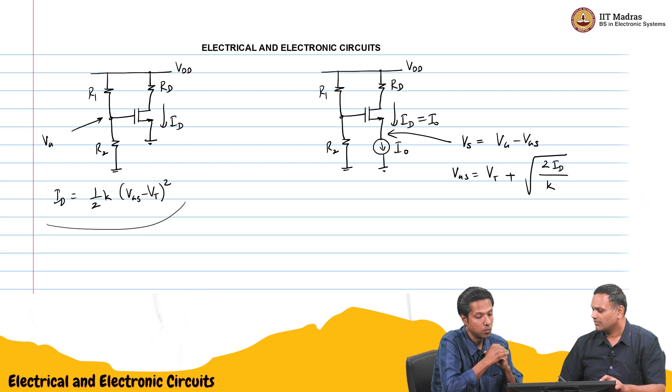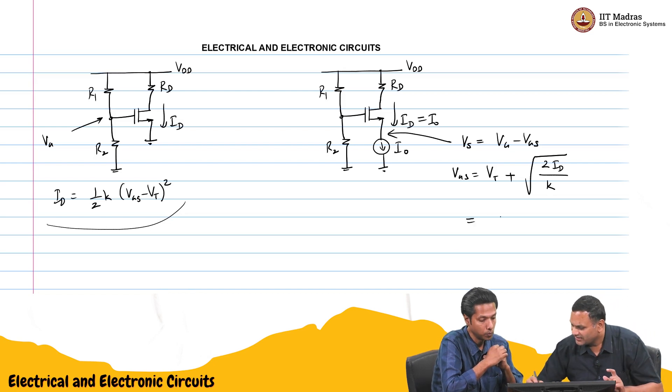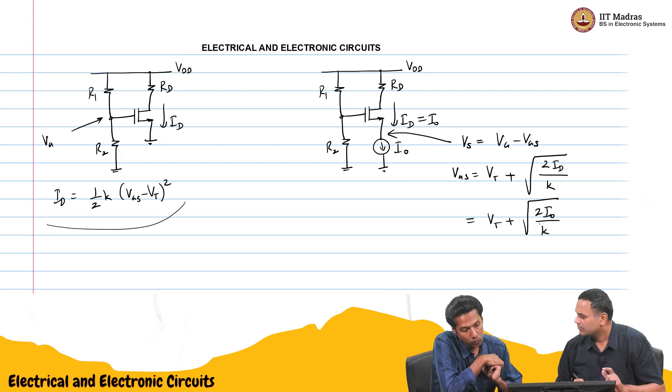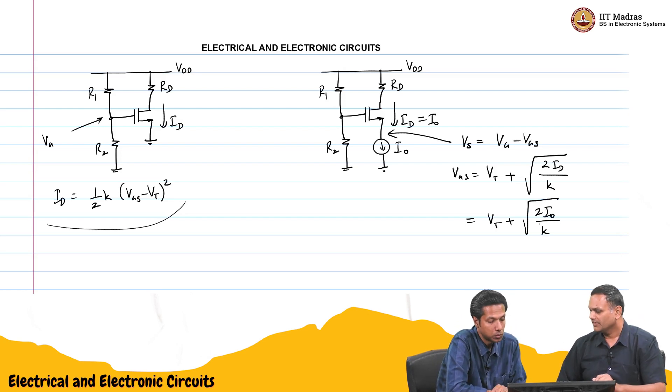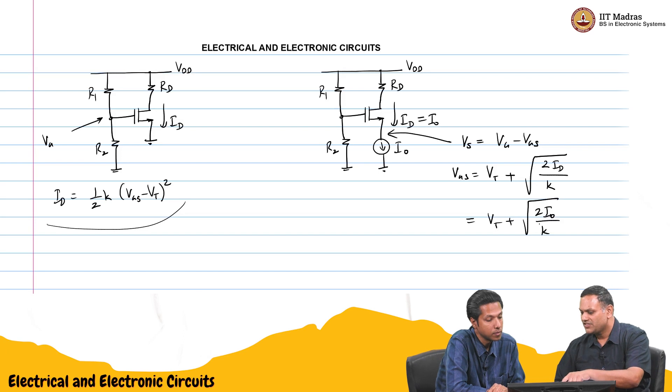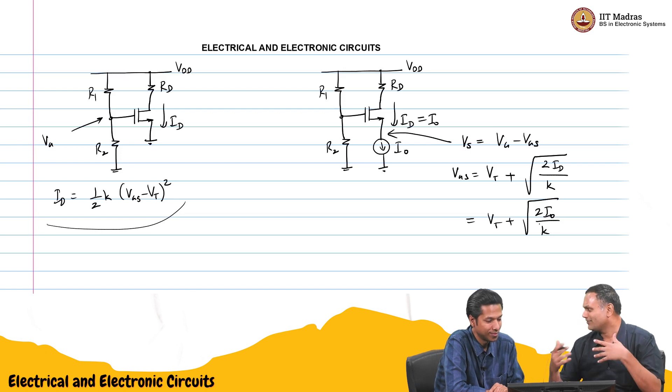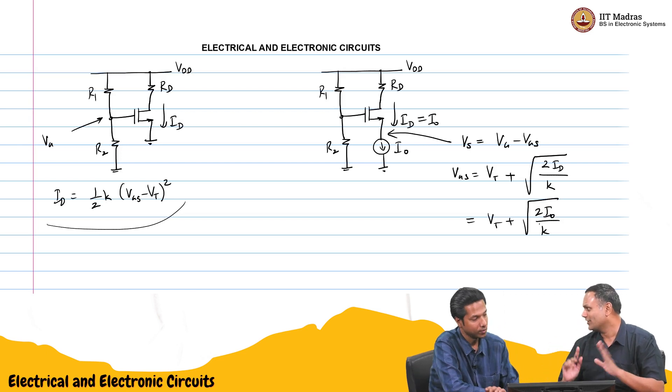This is the general expression. In this case it will be root of 2 I naught by K. Because Id is I naught. You have a current source. You know Vgs from this equation, you know threshold voltage, you know K, you know I naught. You can find out Vgs. Vg is nothing but R2 by R1 plus R2 times Vdd. You can find out everything, all voltages, all currents.